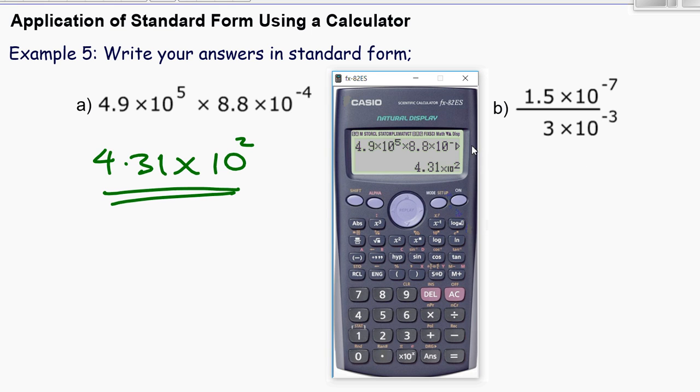Okay, in the next question, we'll do the same thing. So start on. Use the fraction button, it's always easier. So 1.5, 1.5 times 10 to the power negative 7, and then 3 multiplied by 10 to the power negative 3.